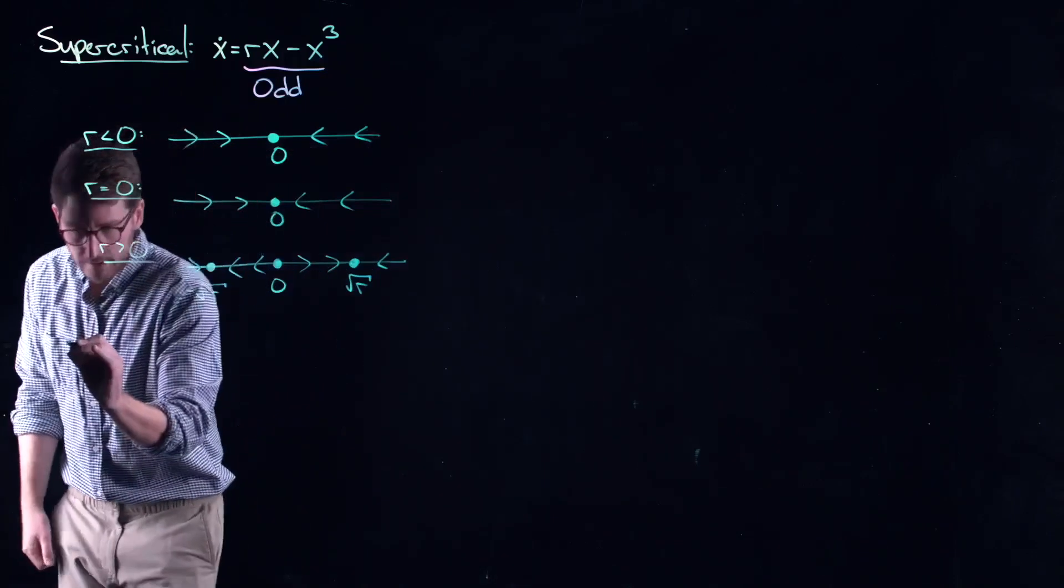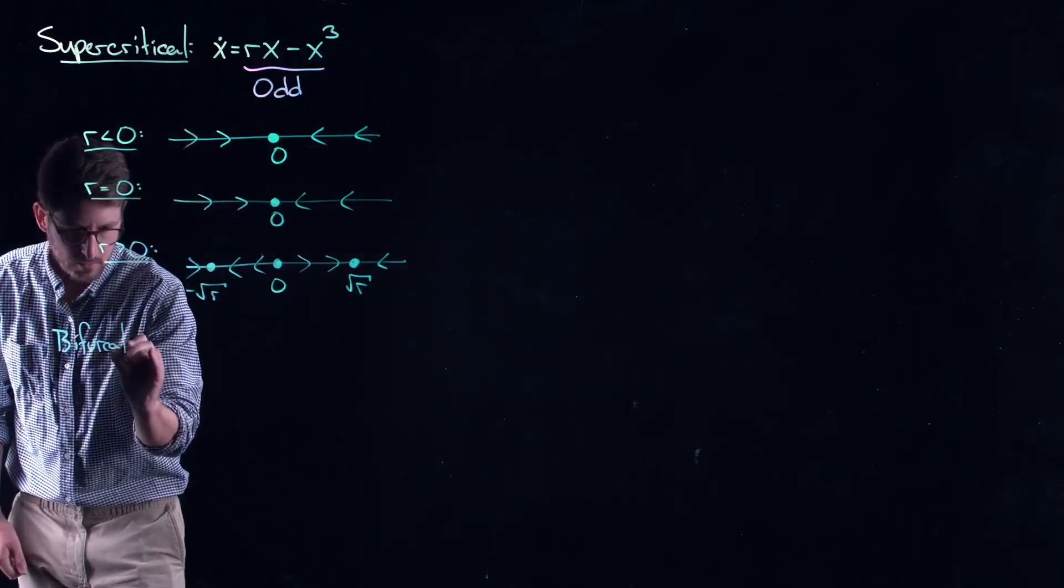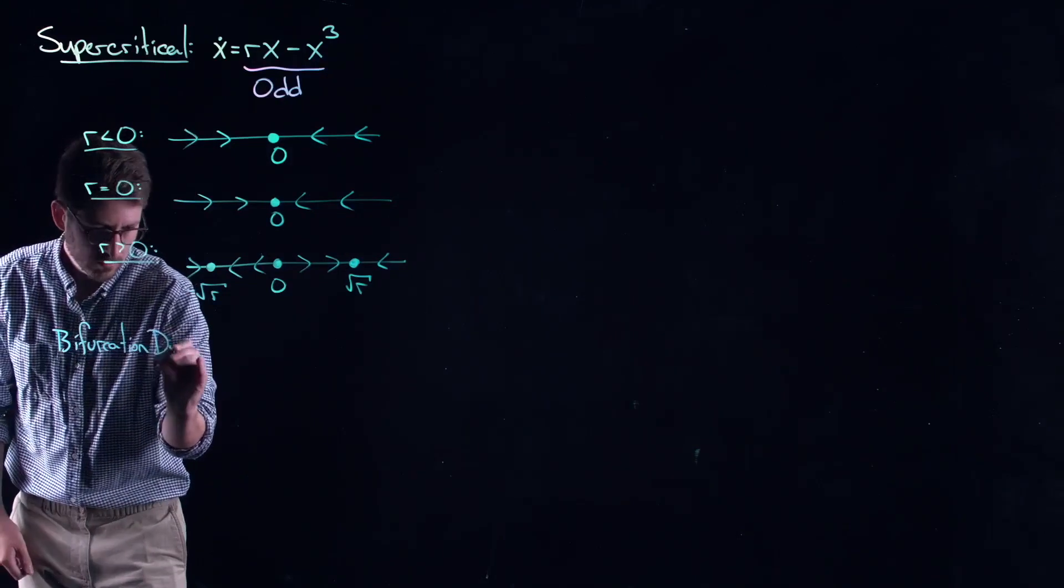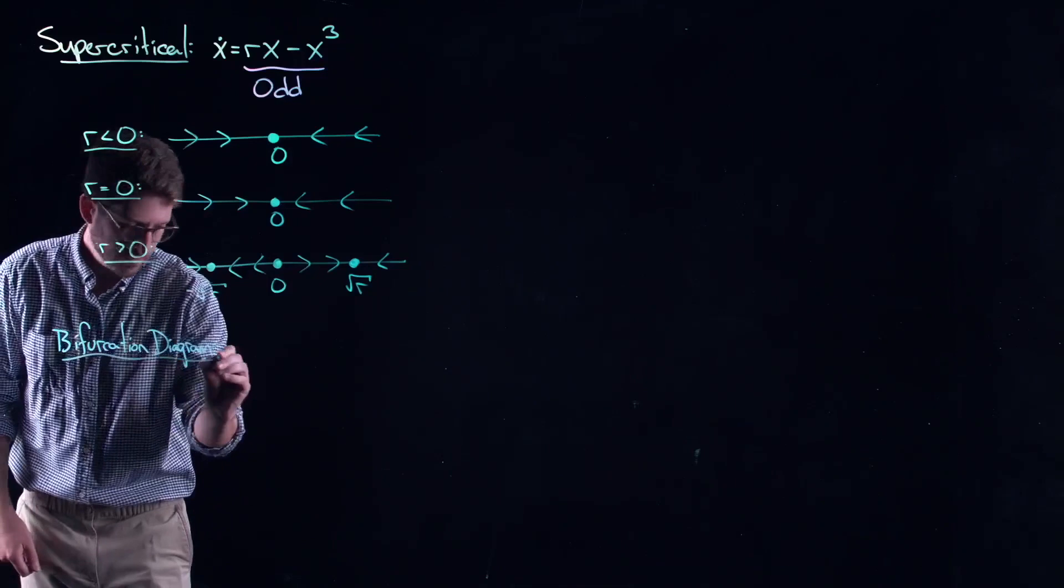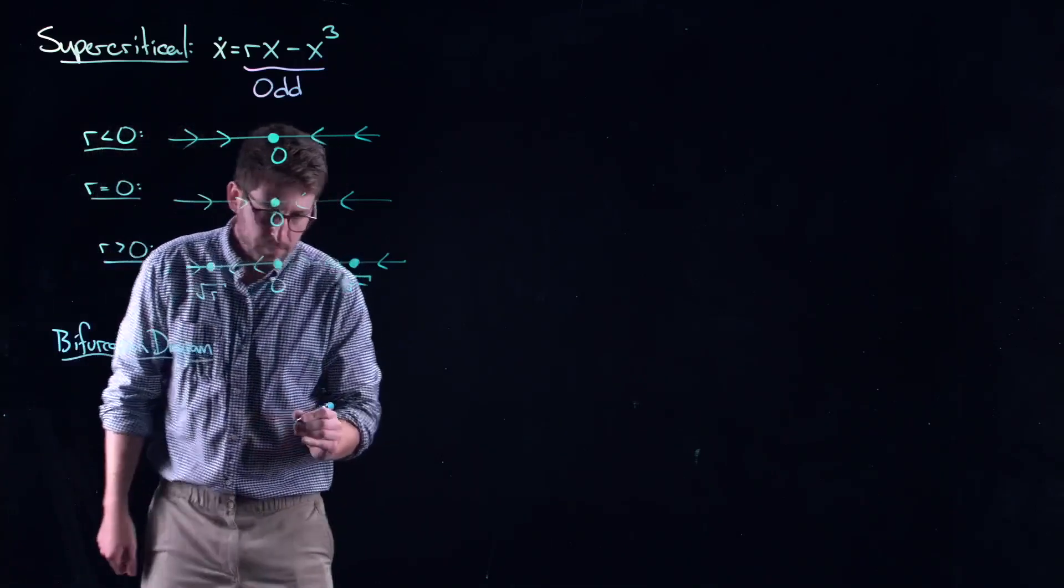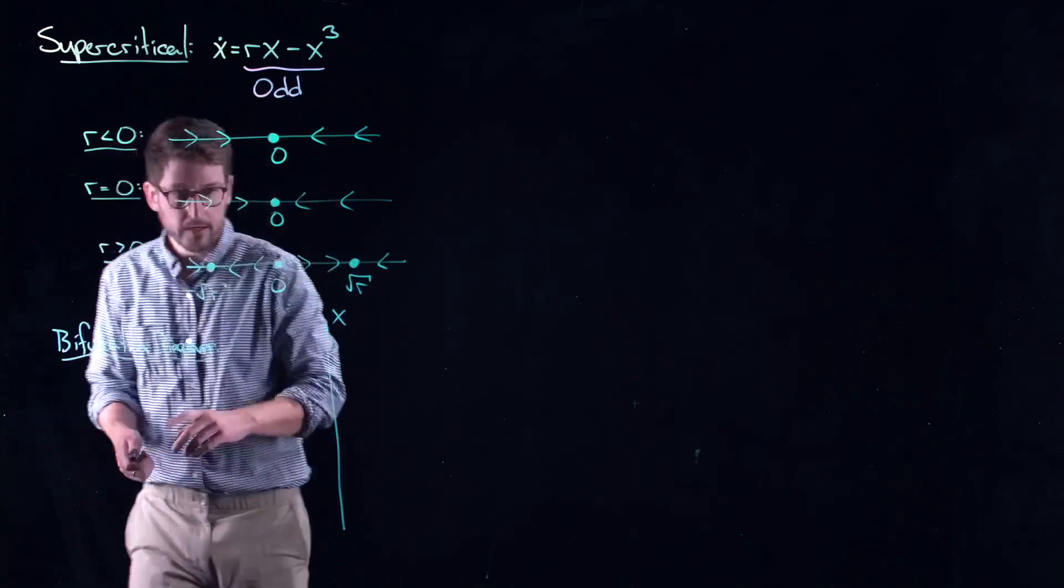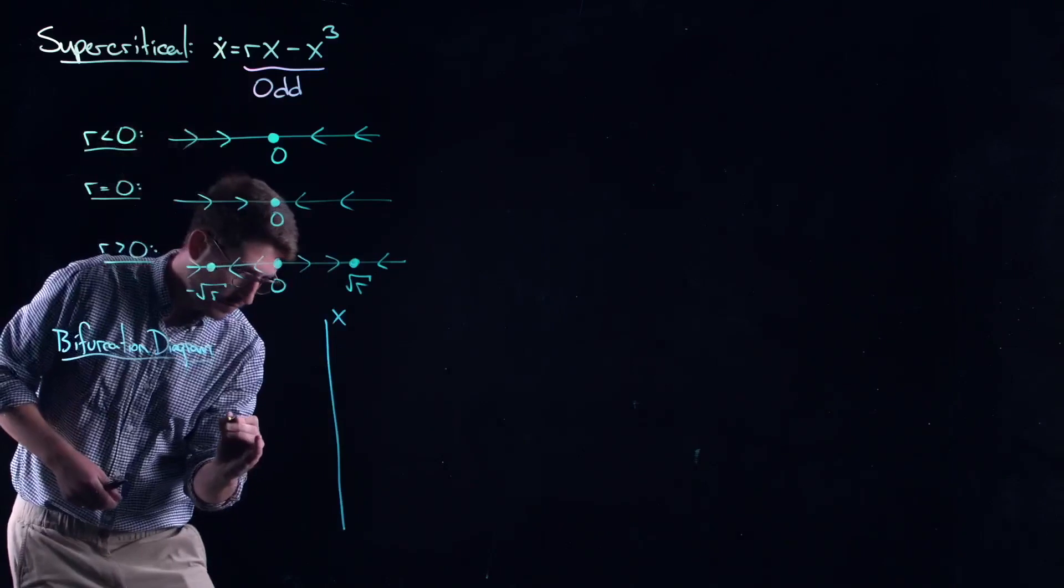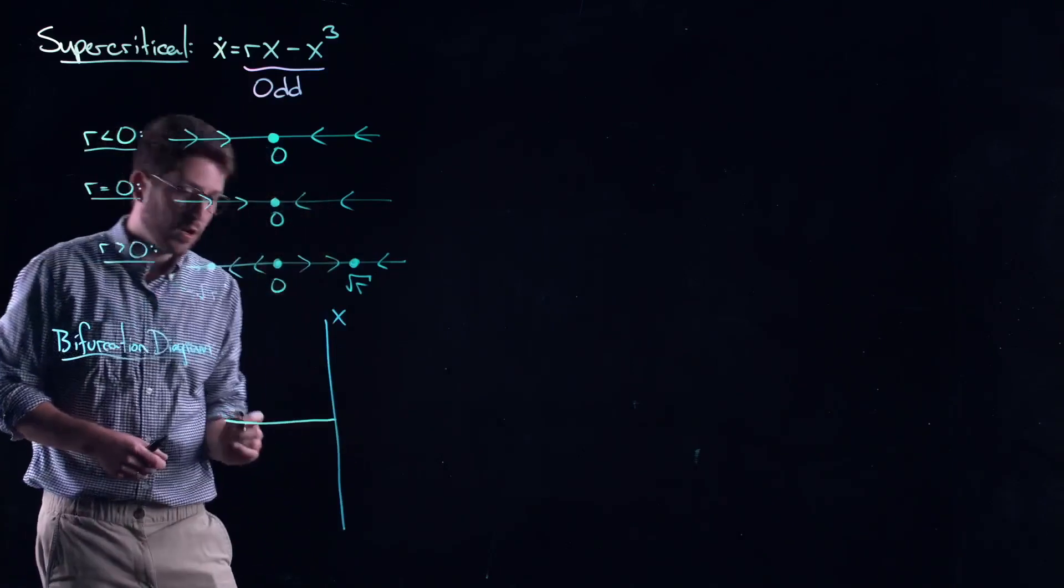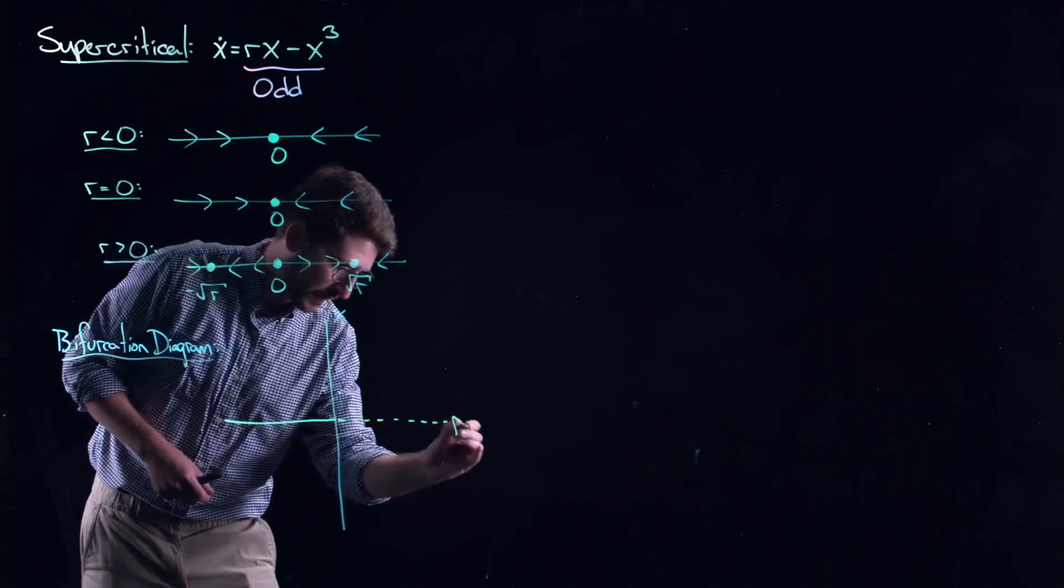So if you do a bifurcation diagram. I put this in the rx plane. x equal to zero is always a solution. And it's stable for all negative values of r. And it becomes unstable for positive values of r.